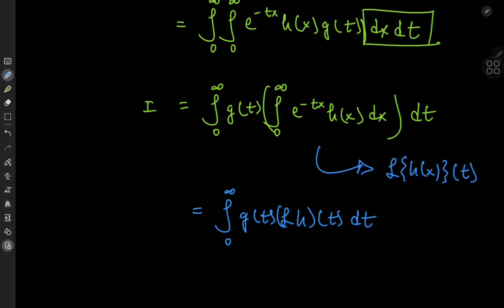And what exactly is the left-hand side? Recall it is the integral from 0 to infinity of h(t) times the Laplace transform of g(t) dt, renaming the dummy variable. This is a really cool equation because it means you can switch the Laplace transform from acting on one function to acting on another.